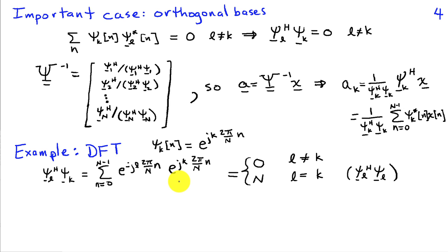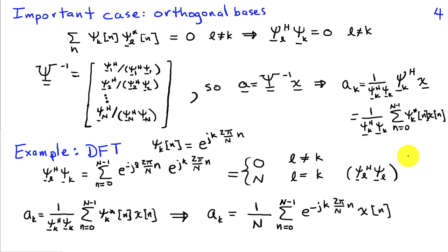And when k is equal to l, of course, then these exponents cancel and I'm left with the sum from n equals 0 to N minus 1 of 1. And that's exactly N. So capital N is the length squared psi l, complex conjugate psi l.